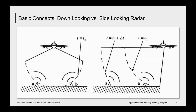A radar is essentially a ranging or distance-measuring device. There are two categories: imaging and non-imaging. Non-imaging examples include altimeters; this webinar series is focused on imaging radars. These radars are side-looking because if the radar looked straight down, it would not be able to differentiate between two points A and B — the signal would reach both at the same time and return at the same time. However, if the radar is side-looking, the time for the signal to reach point A versus B is different, and therefore the two points can be resolved.